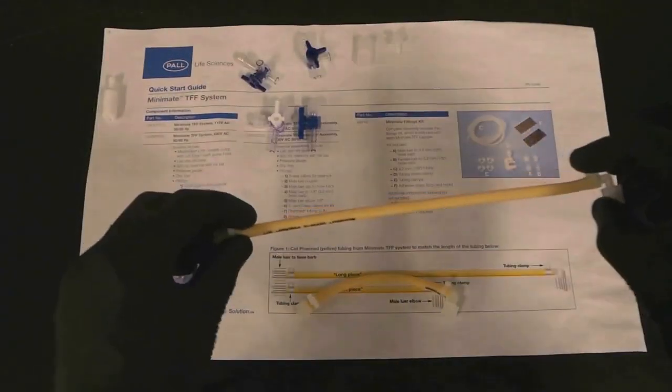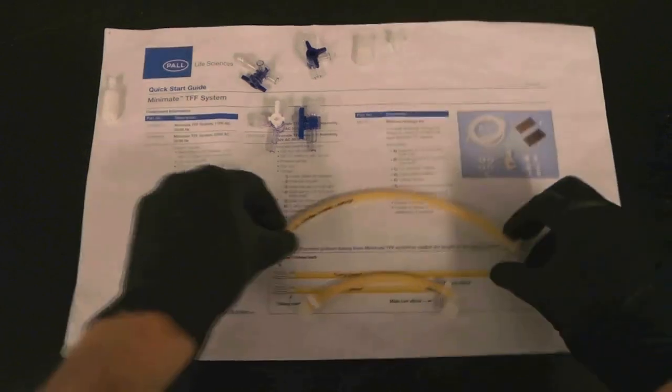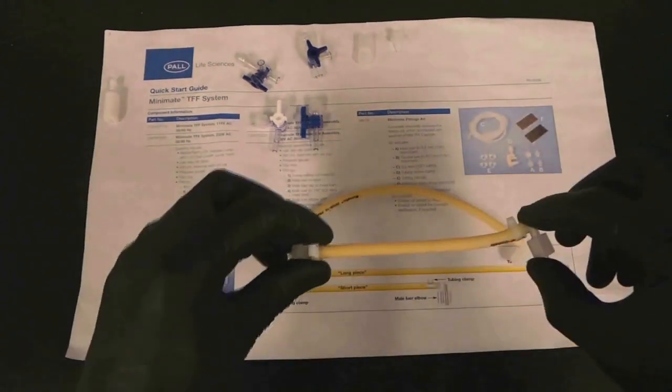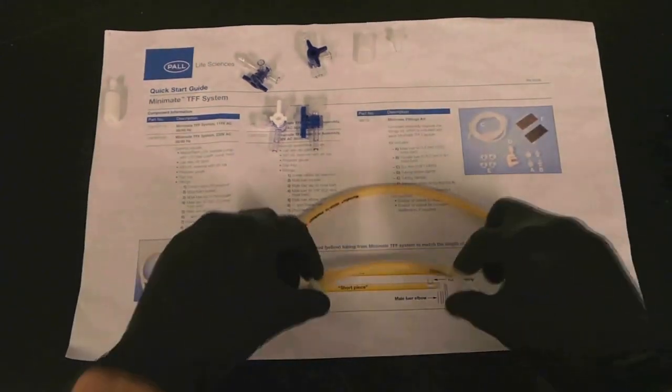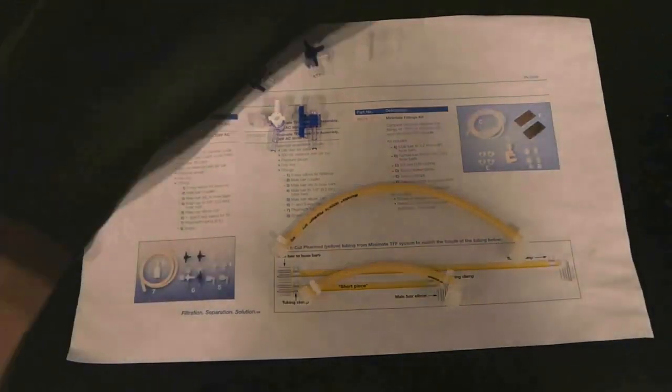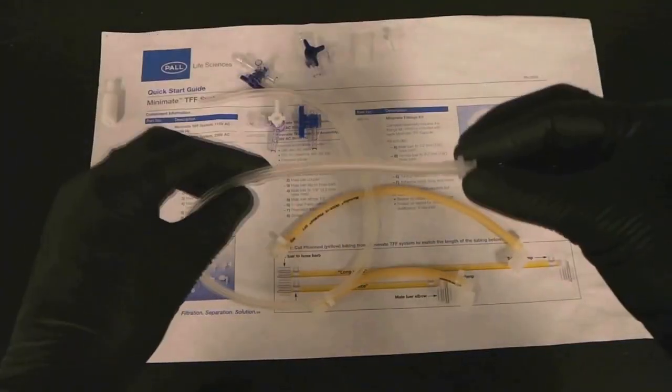The long tubing will go from the reservoir through the pump head to the pressure gauge. The shorter tubing will go from the MiniMate cassette back to the reservoir, and a clear piece of tubing will go to a vessel to collect the permeate.